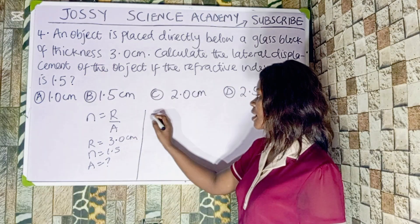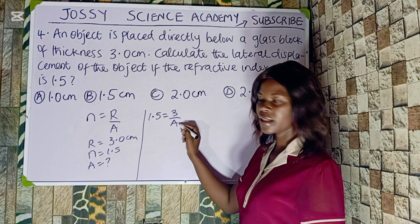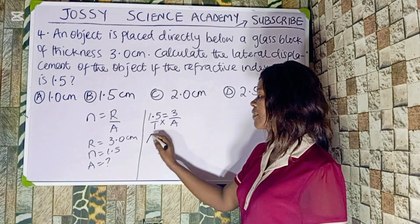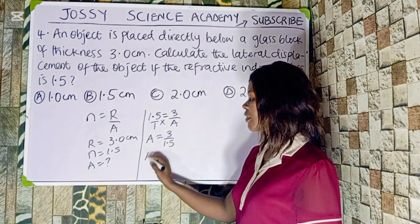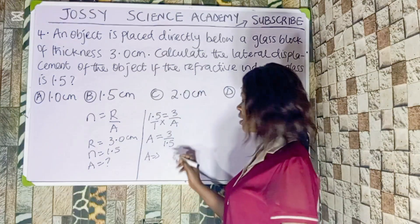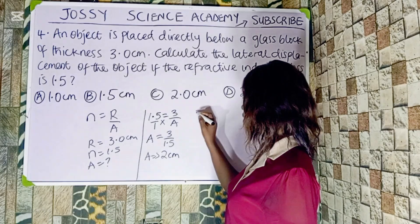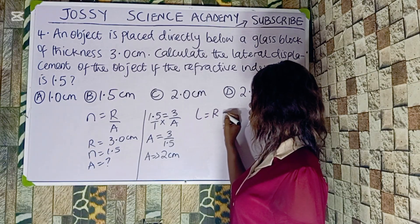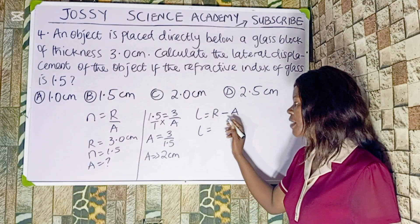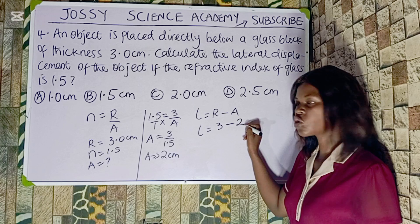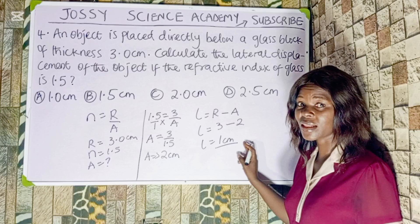We have N = 1.5, real depth = 3.0 cm, and we need apparent depth A. So: 1.5 = 3 over A. Cross-multiplying, A = 3 over 1.5 = 2 cm. Now for the lateral shift or displacement, L equals real depth minus apparent depth: L = 3 − 2 = 1 cm.